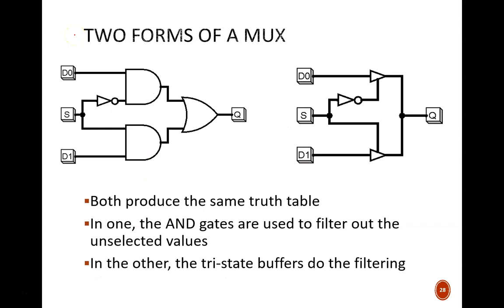We could also take advantage of high impedance in the design of many combinational circuits. Shown here is the example of a 2-to-1 mux. On the left is the same strategy discussed in earlier videos. AND gates act as filters to stop the signal of the unselected input.